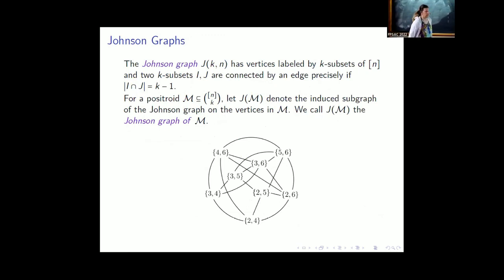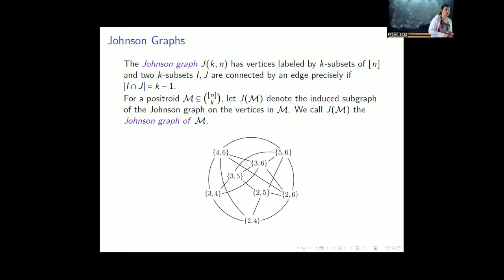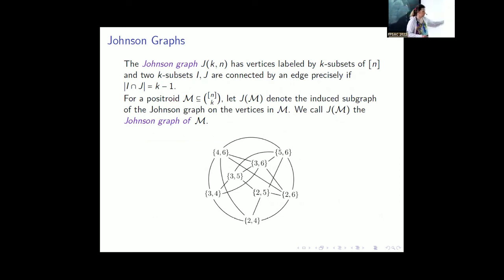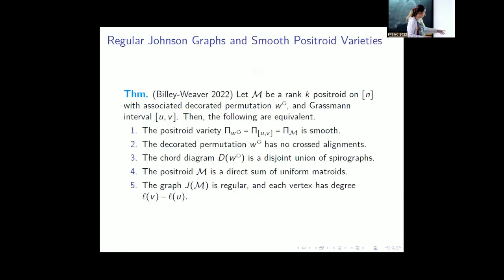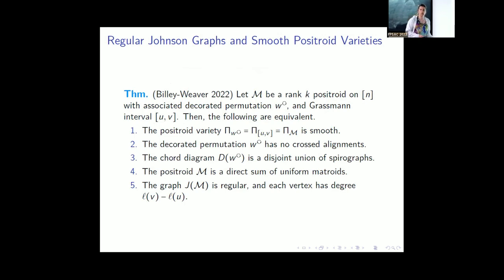This statement led us to look at the Johnson graph — a graph on size-k subsets of {1,...,n} where you attach two subsets if they differ by one element. If you restrict to the induced subgraph corresponding to the positroid, this graph controls all the structure. Jordan and I propose this as the analog of the Bruhat graph. The Bruhat graph is regular if and only if the corresponding Schubert variety is smooth — and we have the same thing here: the induced Johnson graph is regular if and only if you have a smooth variety.